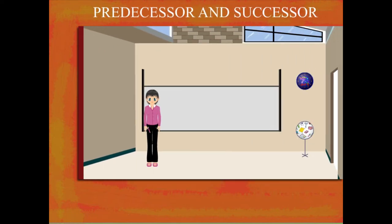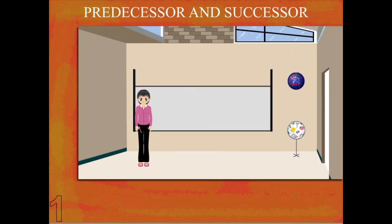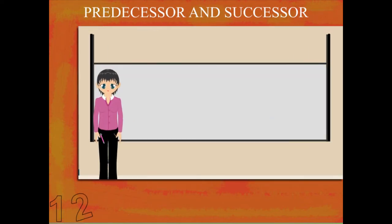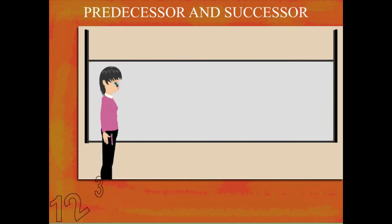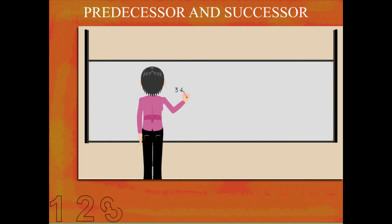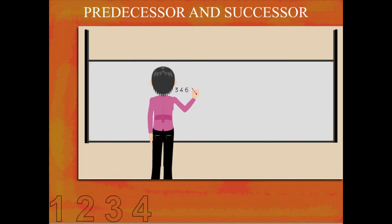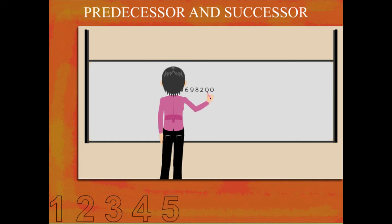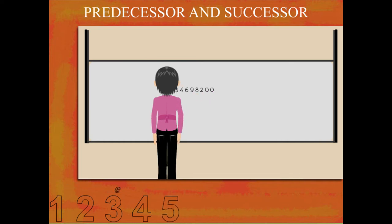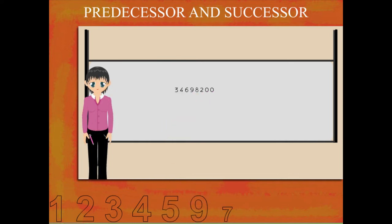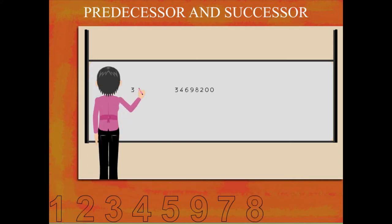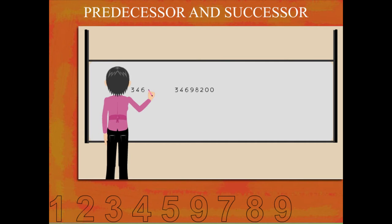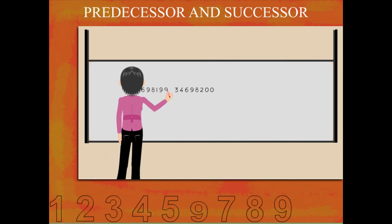Teacher Nancy writes the number three crores forty six lakh ninety eight thousand and two hundred on the board. She now writes another number to its left: three crore forty six lakh ninety eight thousand one hundred and ninety nine.